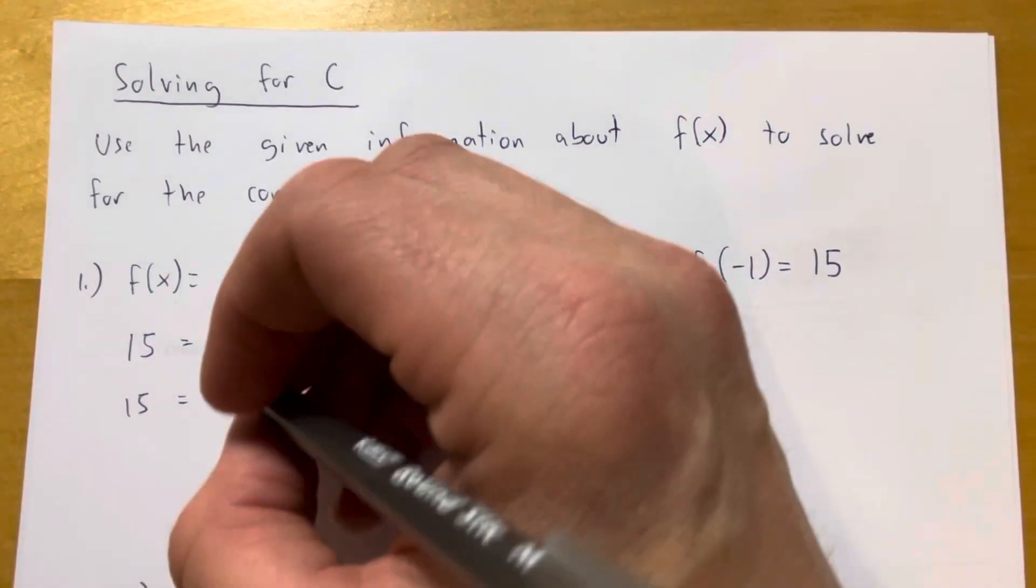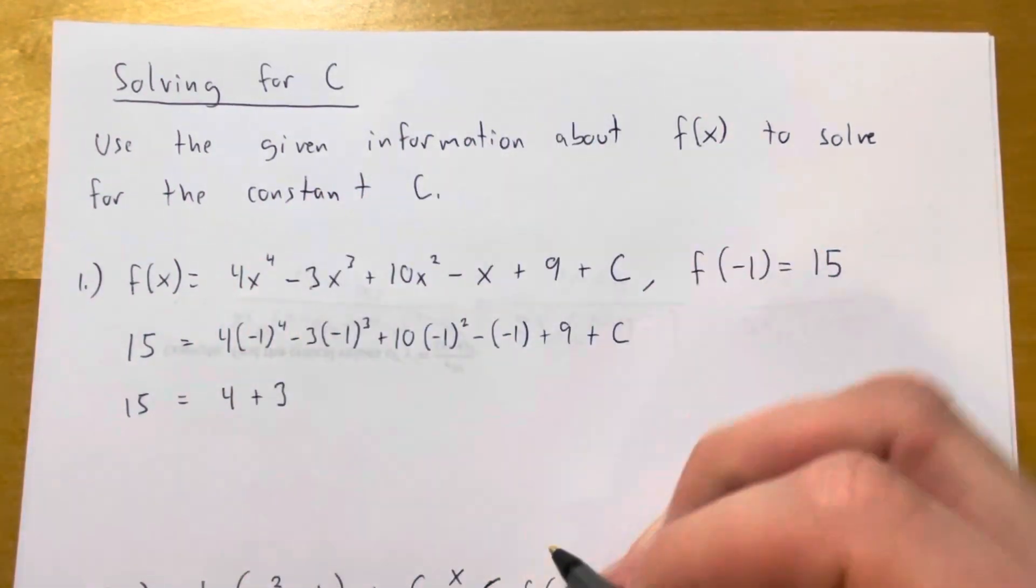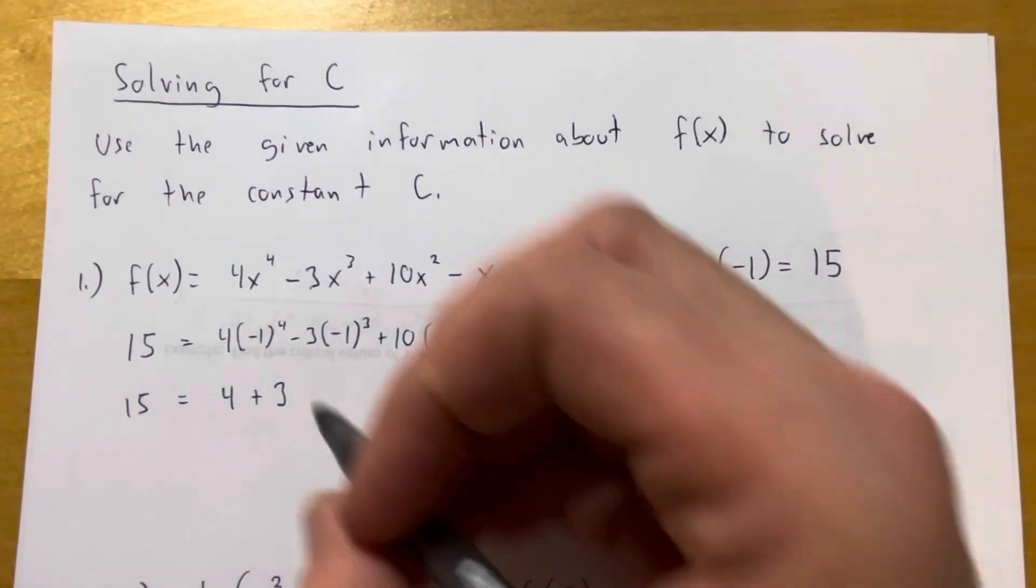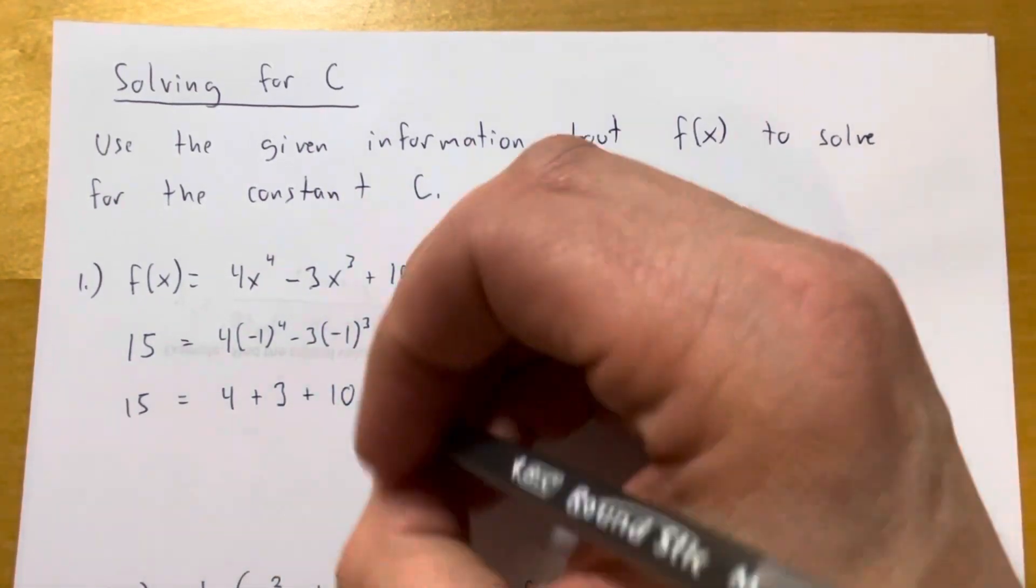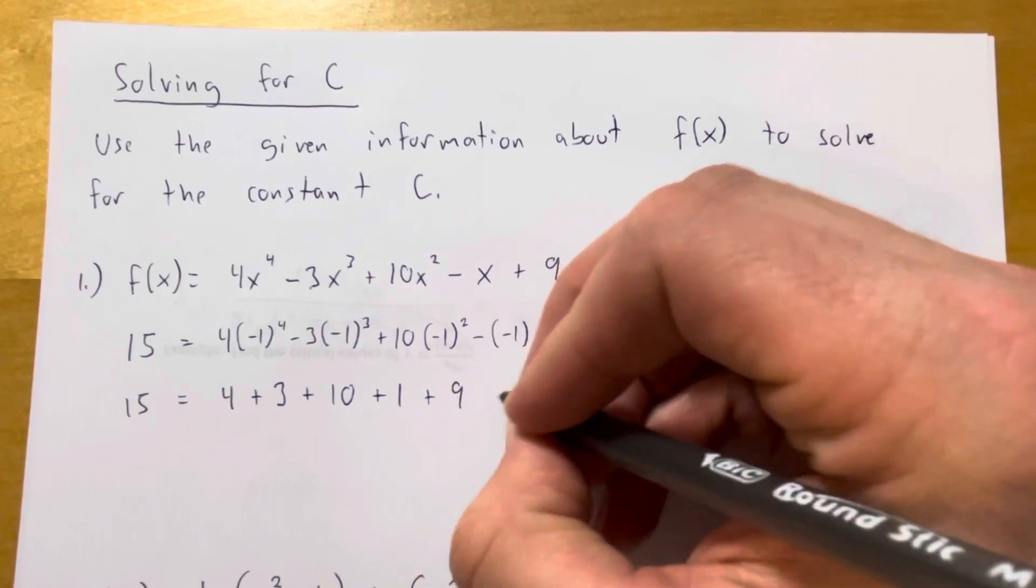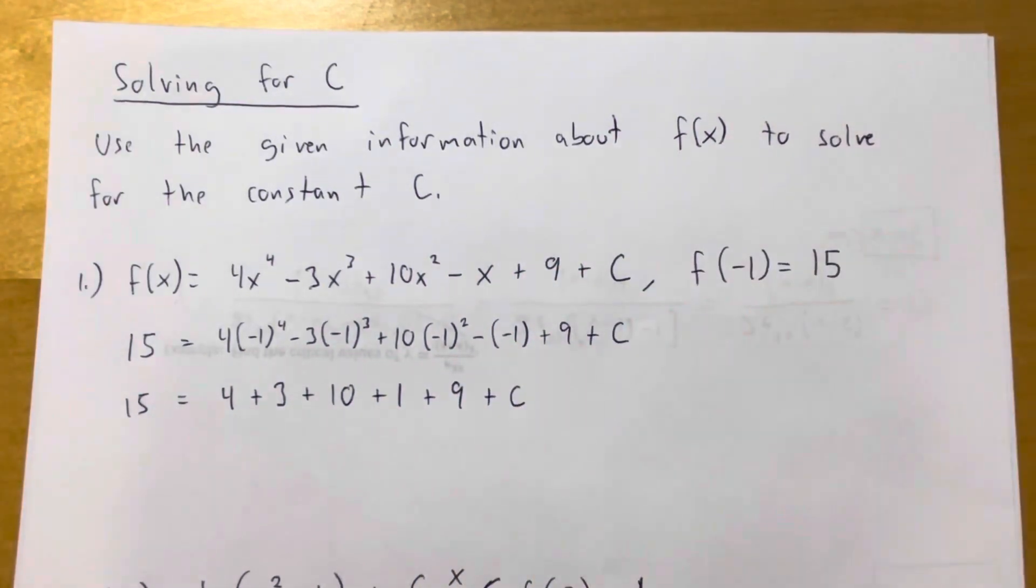Negative 3 times negative 1 is positive 3. Negative 1 squared is 1 times 10 would be plus 10. Minus negative 1 is going to give me a plus 1. And then I have a plus 9 plus C.